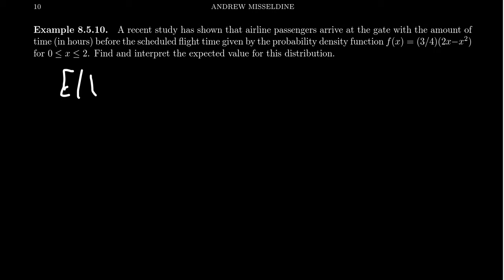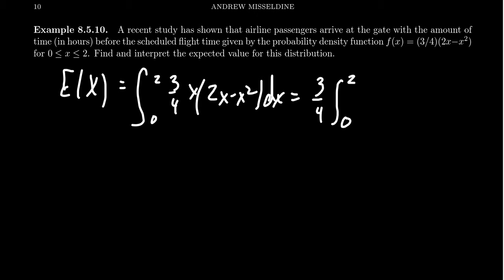One can show this is a density model and probability density function. If you take E of X, we integrate from 0 to 2, 3 fourths x times 2x minus x squared dx. Distribute the x, take out the 3 fourths. We go from 0 to 2, 2x squared minus x cubed dx.